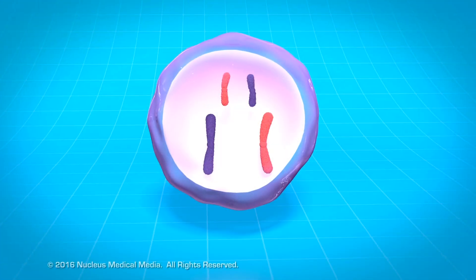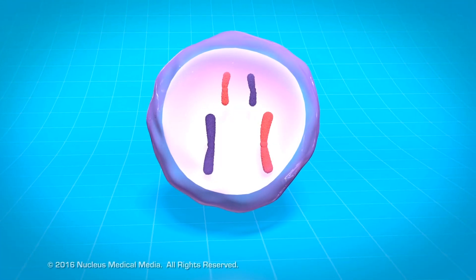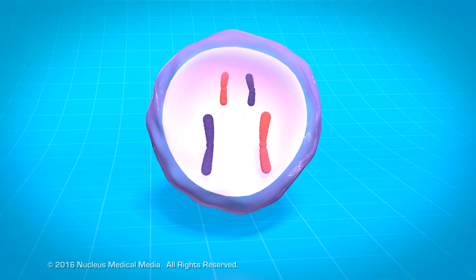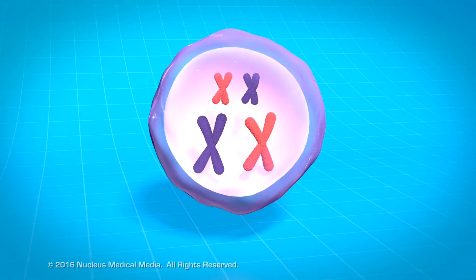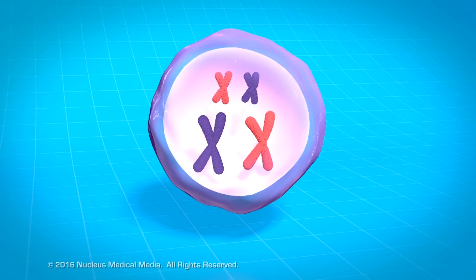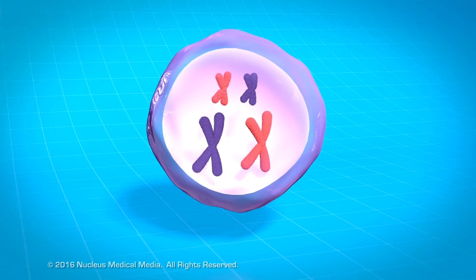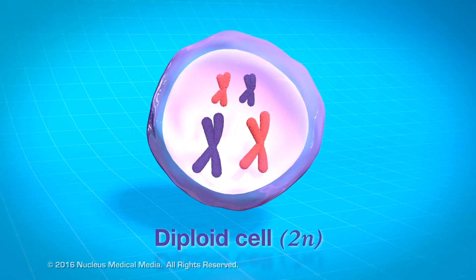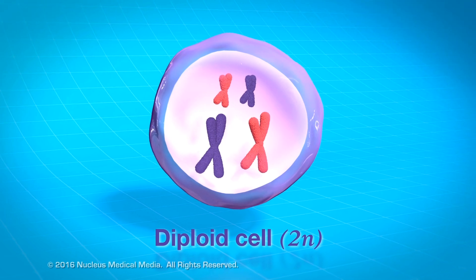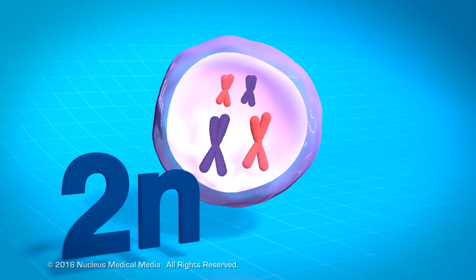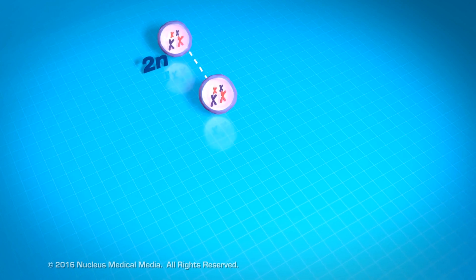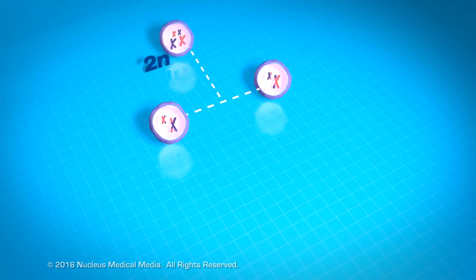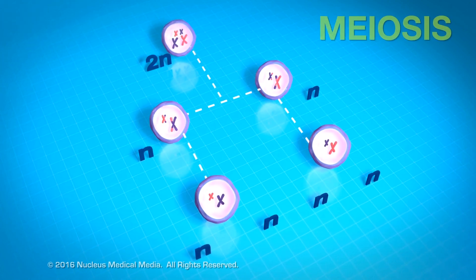A cell about to undergo meiosis will have already replicated its chromosomes during interphase of the cell cycle. This original cell is diploid, which means it has two sets of chromosomes, one from each parent, sometimes written as 2N. Through two stages of cell division, meiosis produces four genetically different haploid gametes, sometimes written as N.